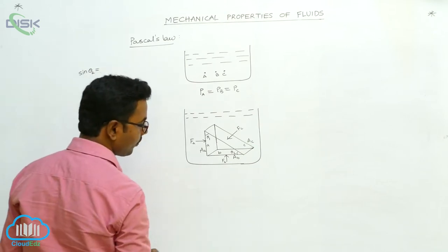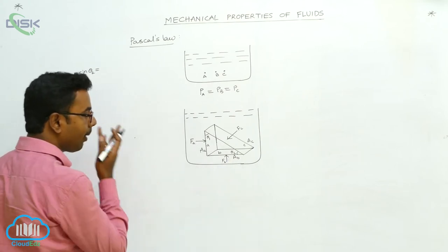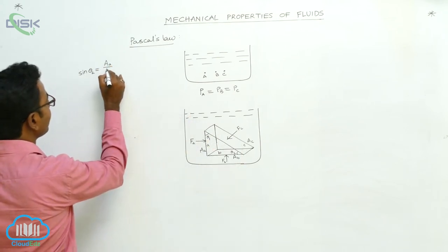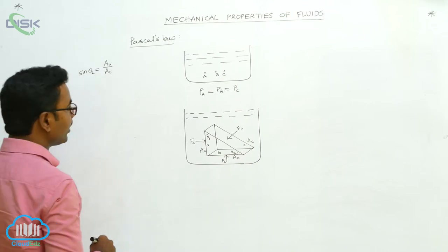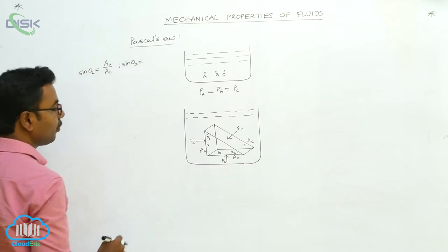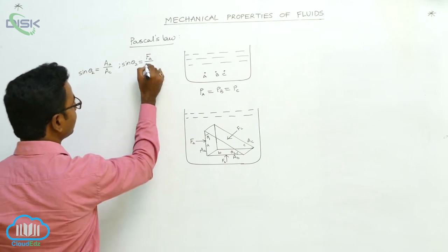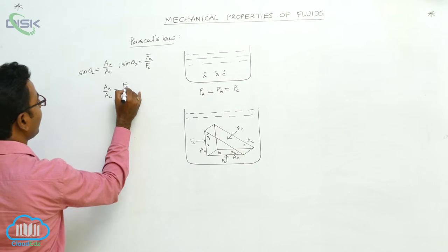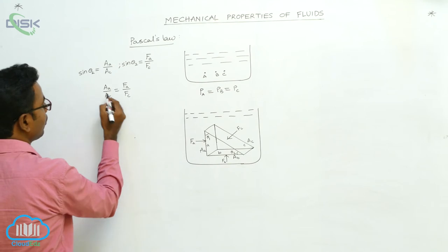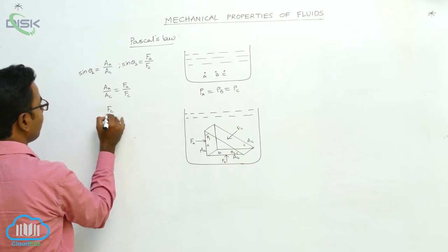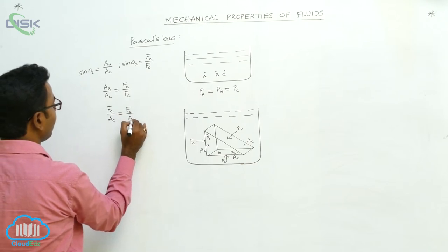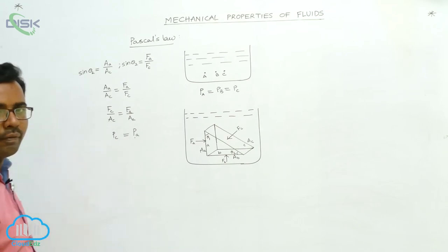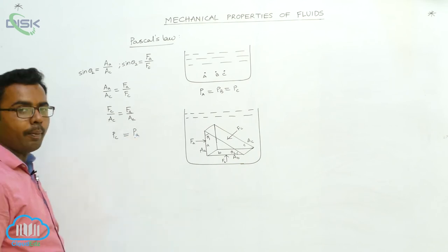Similarly, applying sine theta 2 for forces: the force on the opposite face is F_A, and on the hypotenuse face is F_C. Since sine theta 2 is the same, we can write A_A over A_C equals F_A over F_C. Doing cross multiplication, we get F_C over A_C equals F_A over A_A. F_A over A_A is the pressure on face A, and F_C over A_C is the pressure on face C. Similarly, we can also prove that this equals the pressure on face B.